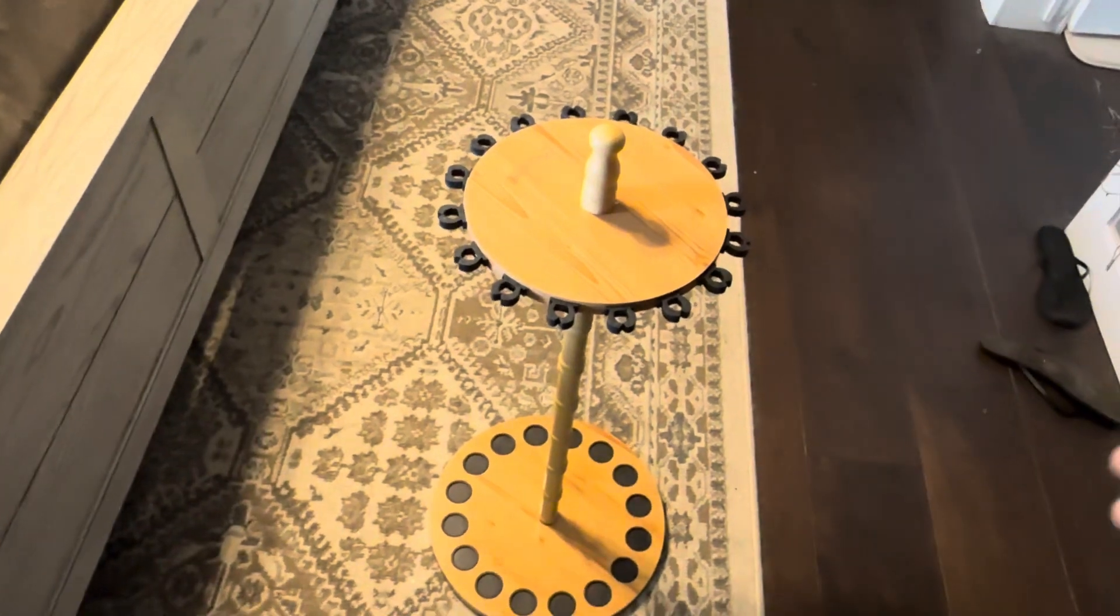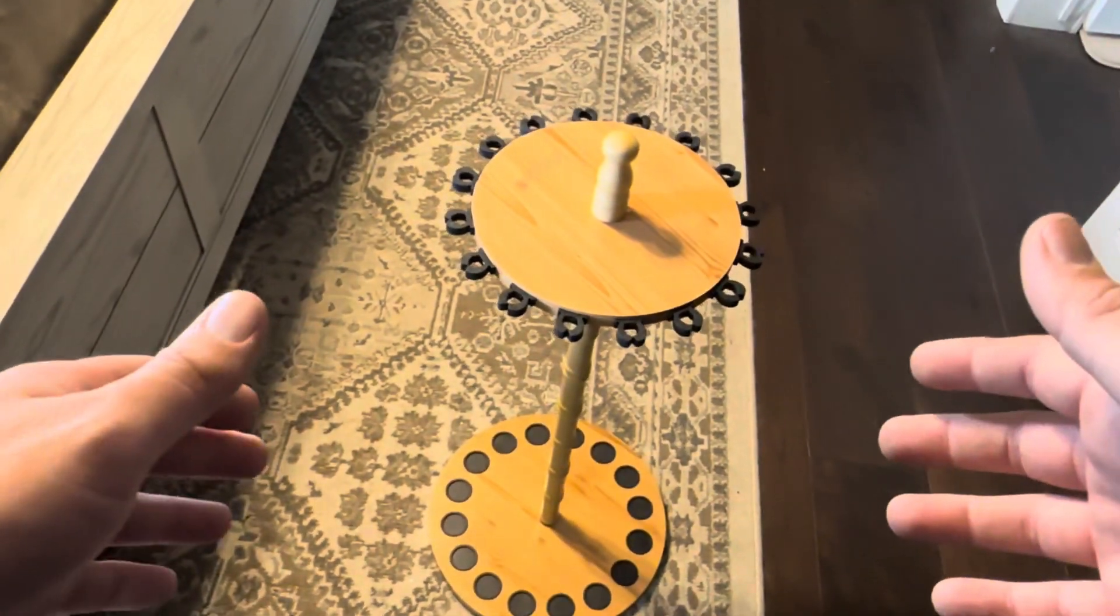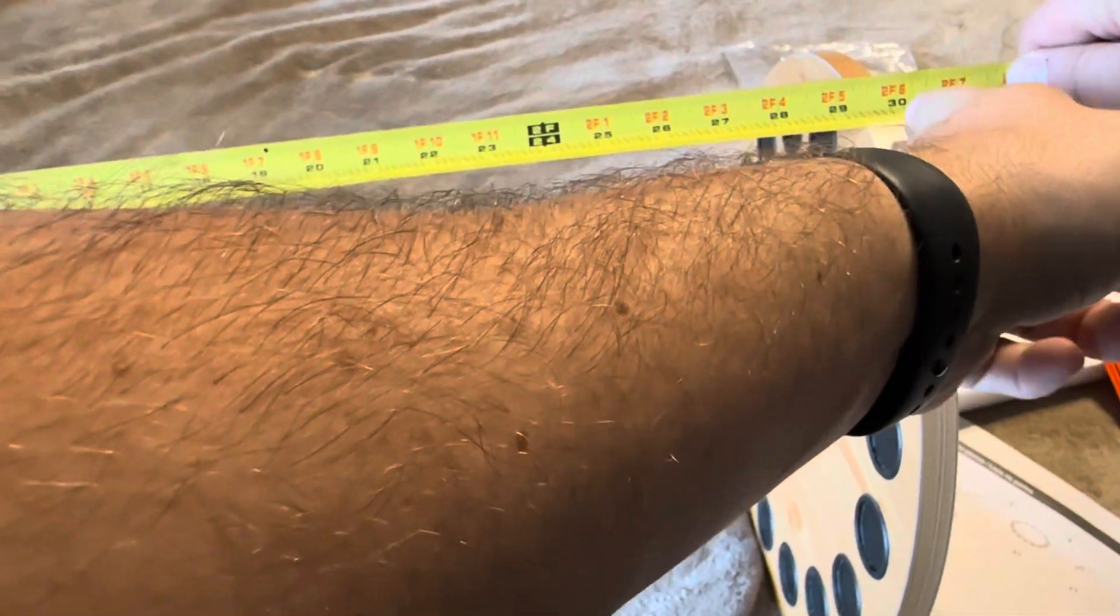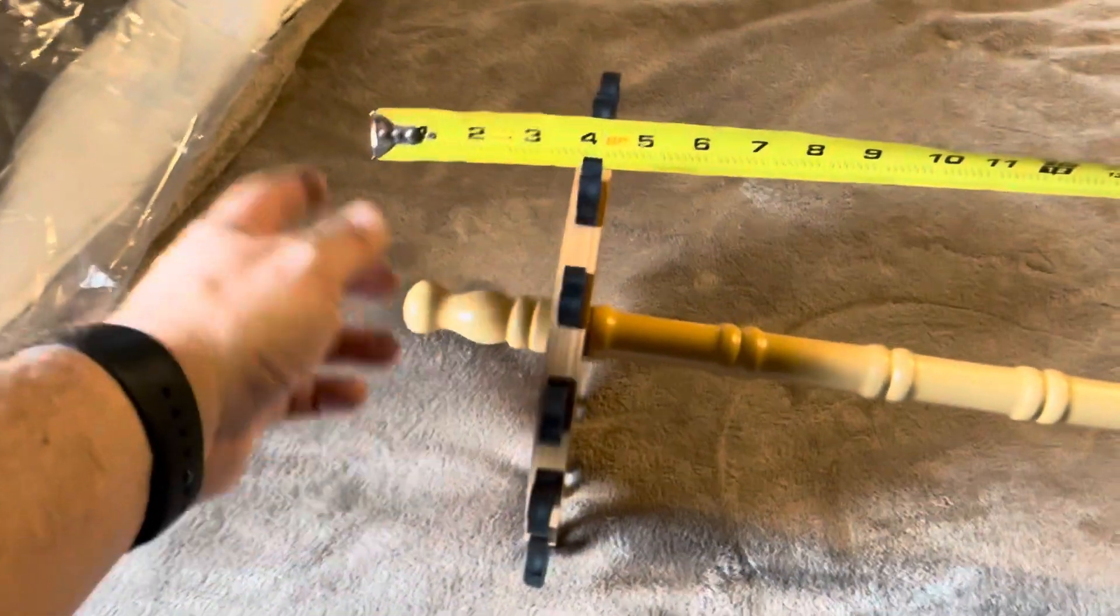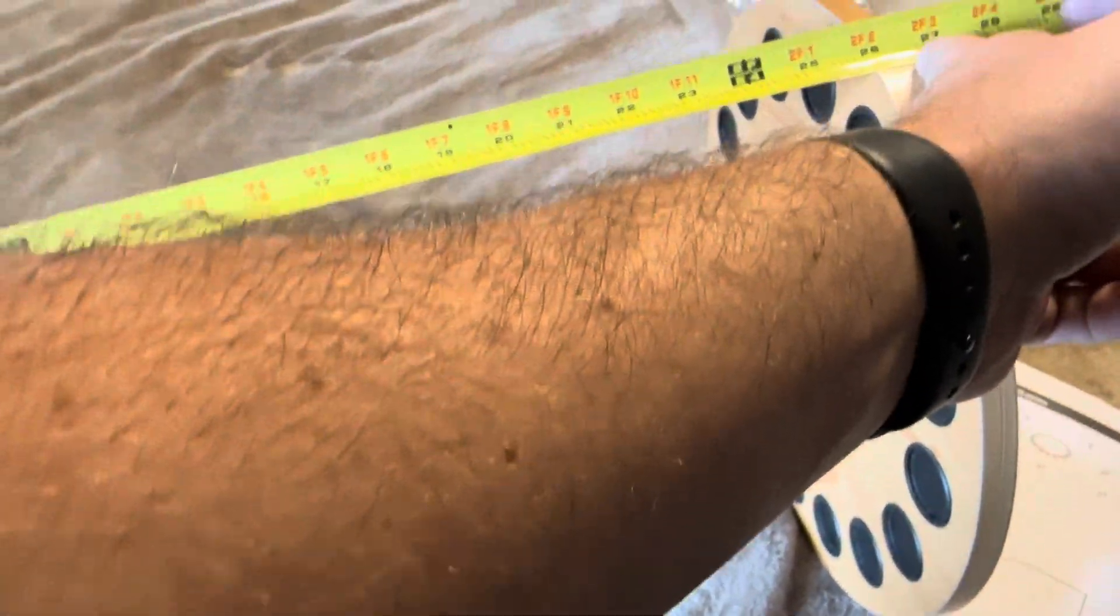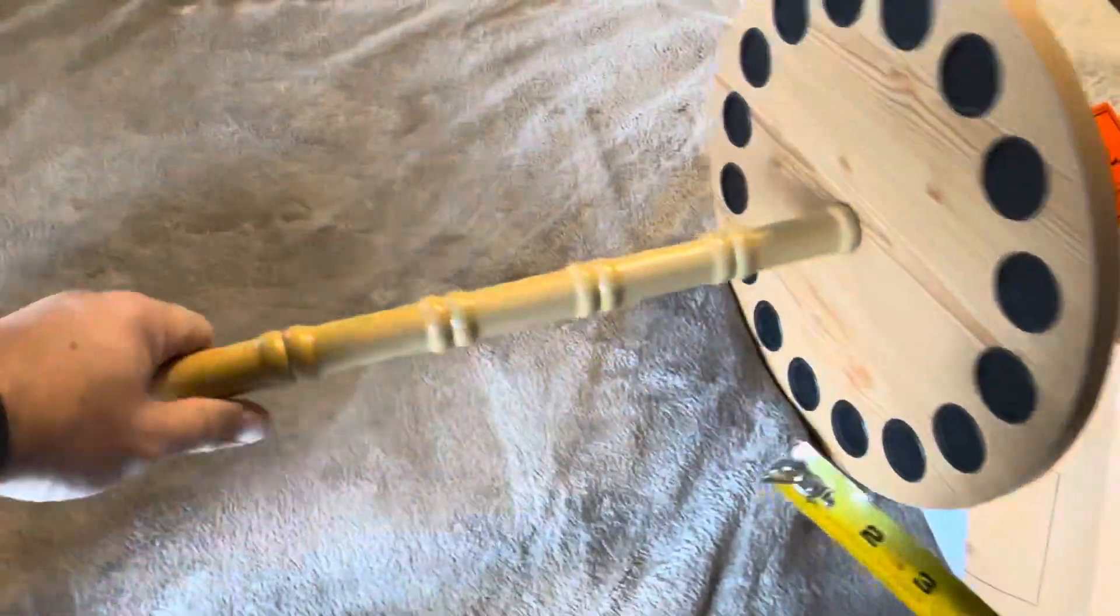Now I did want to get to the exact measurements on how big this is. So actual measurements on this is going to be about 30 inches and that's from here all the way to the top of this point. If you're just including where the actual rods are going to be at it's going to be about 26 and a half inches.